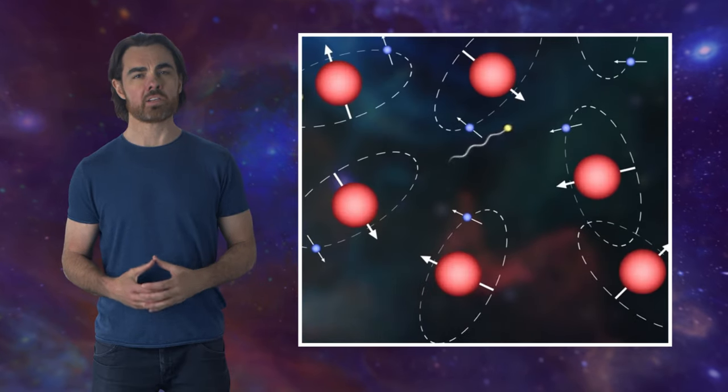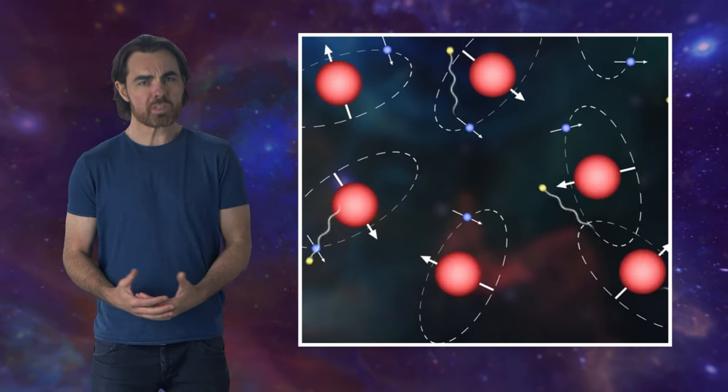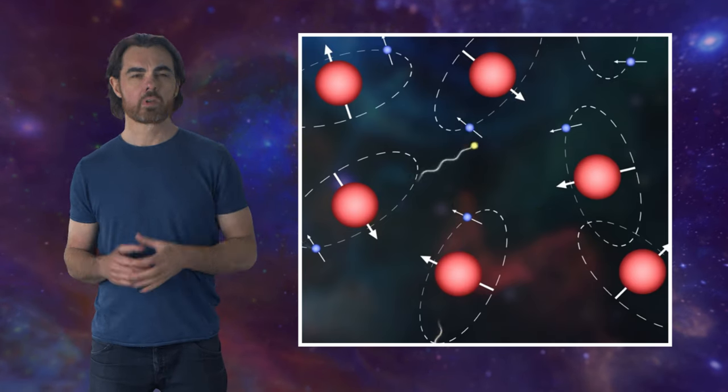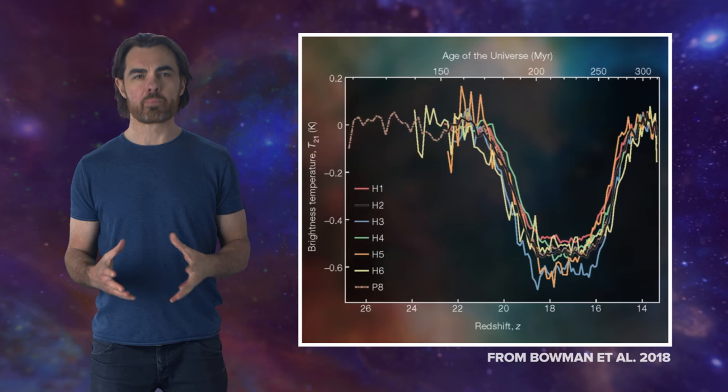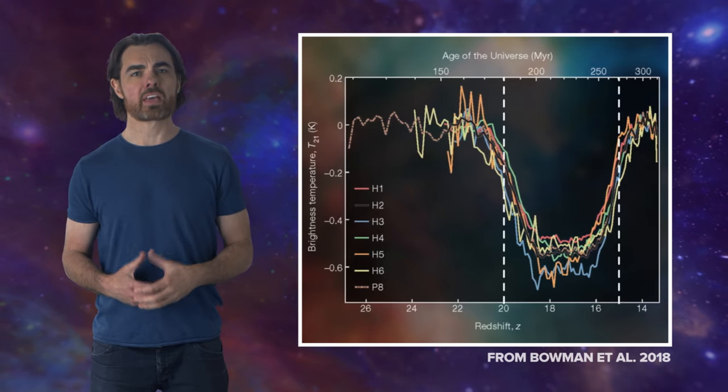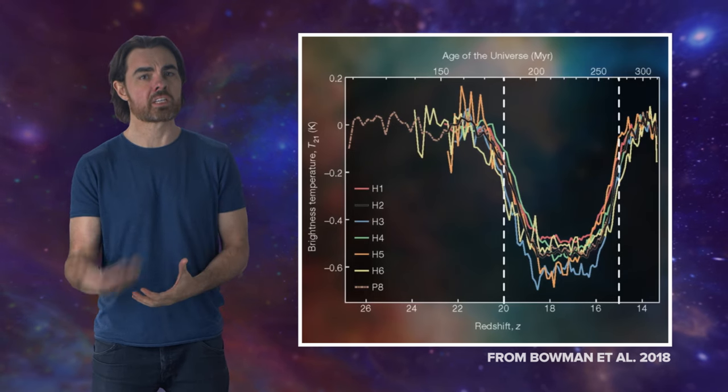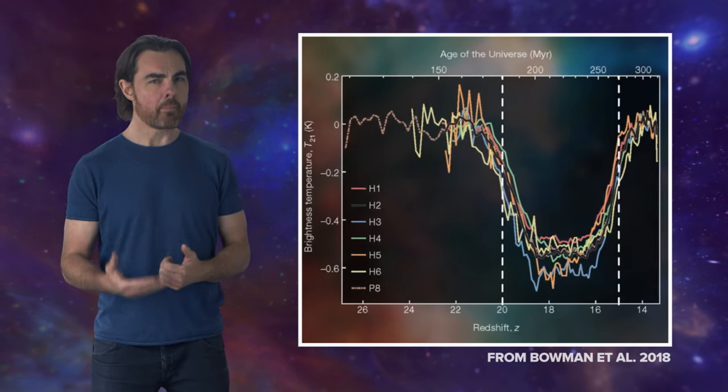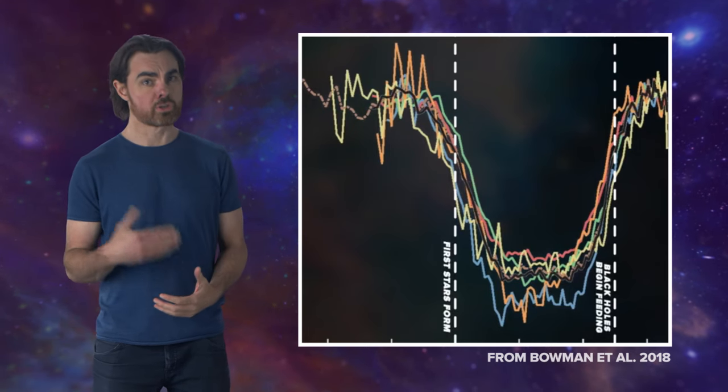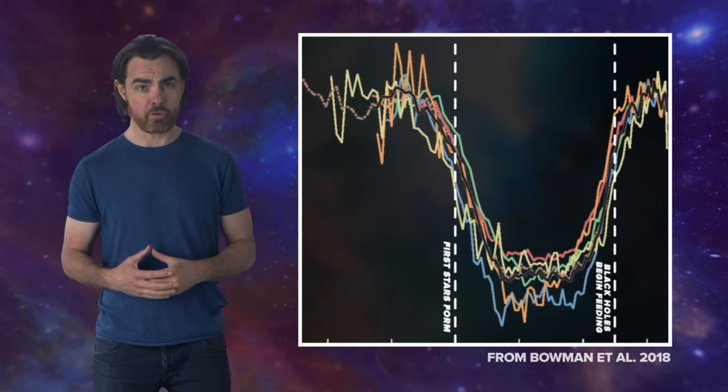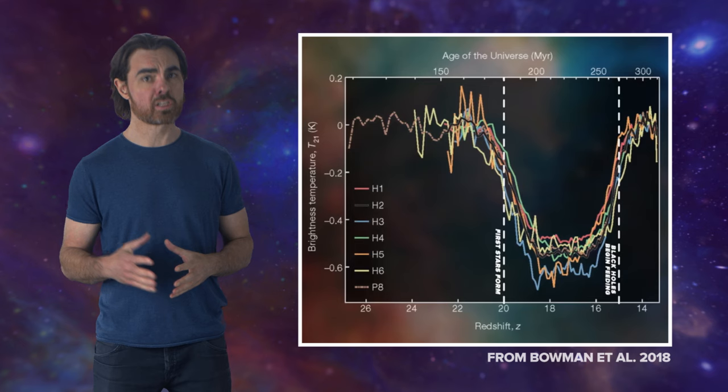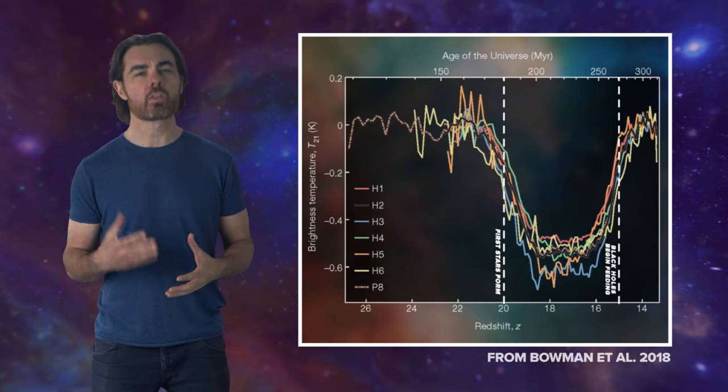When the first stars ignited, they heated the surrounding gas, which caused it to absorb more 21 cm radiation than it was emitting. This produced a slight dip in the cosmic microwave background spectrum. The absorbed wavelength has now been stretched, redshifted, by the expanding universe. The amount of that redshift tells us when the very first stars formed, because it was those stars that enabled that absorption in the first place. And they formed around 150 million years after the big bang, ending the cosmic dark ages.